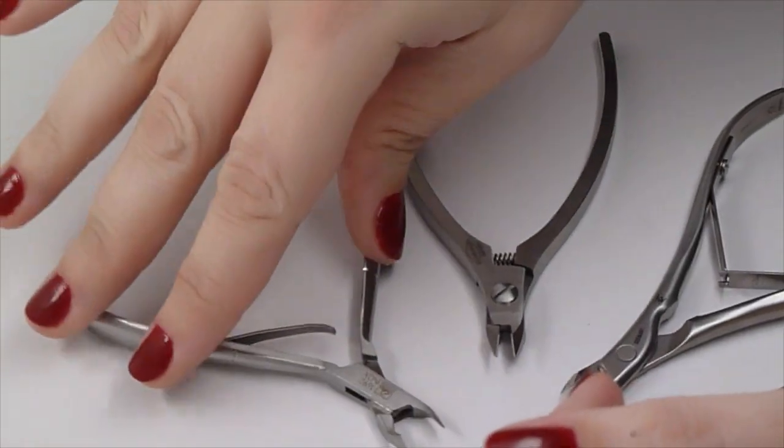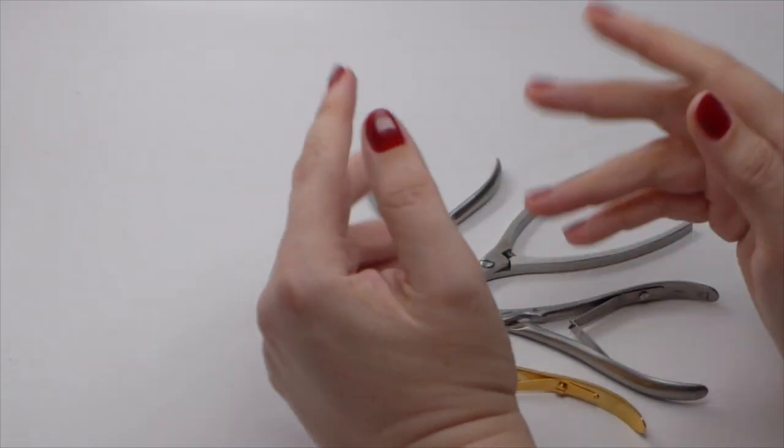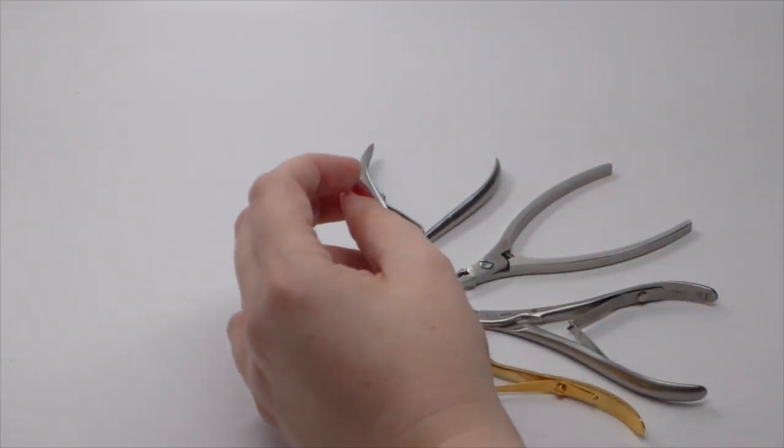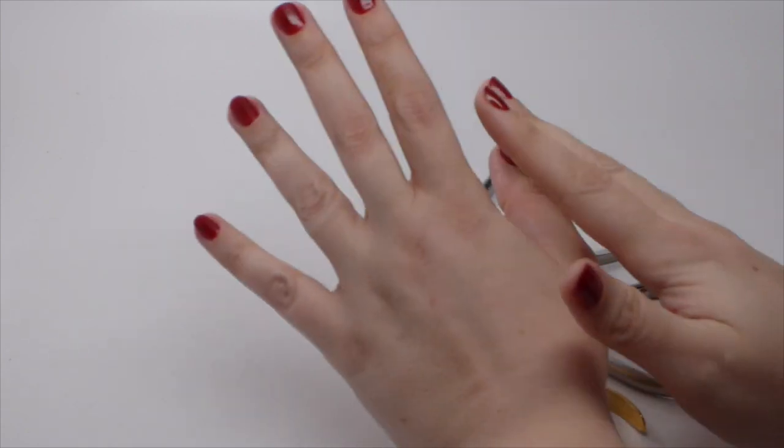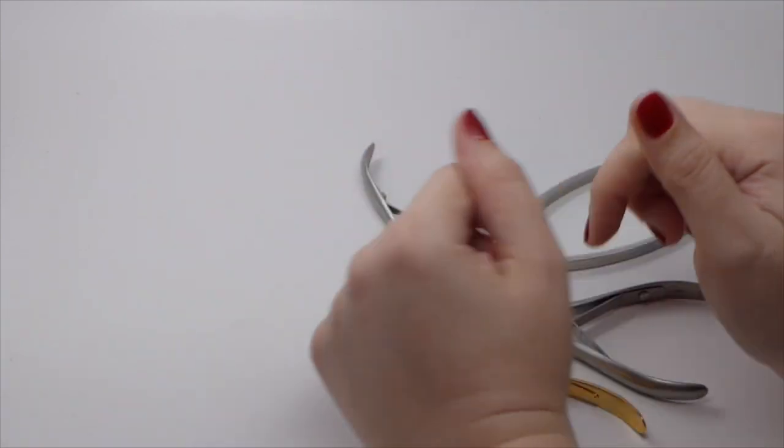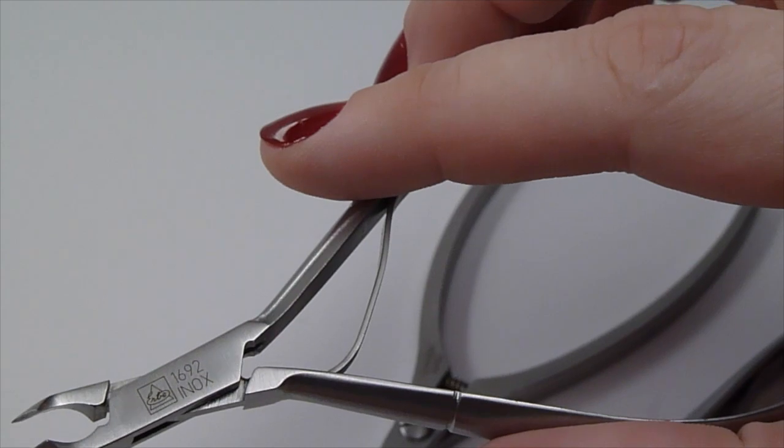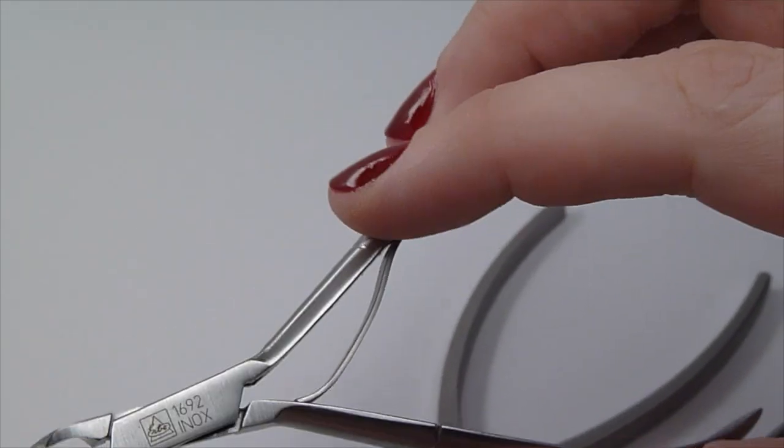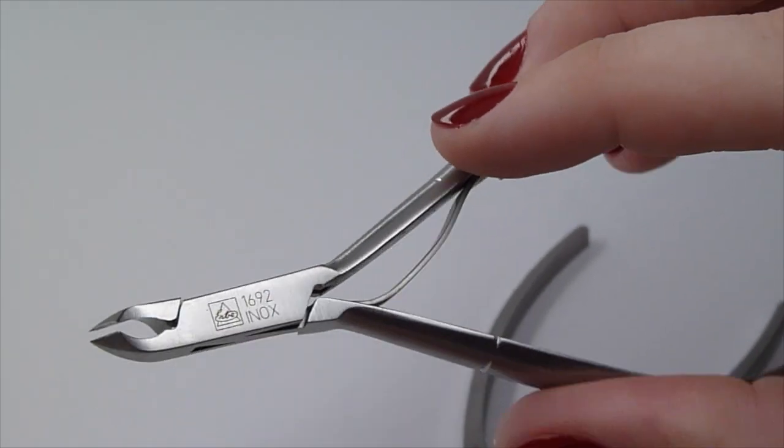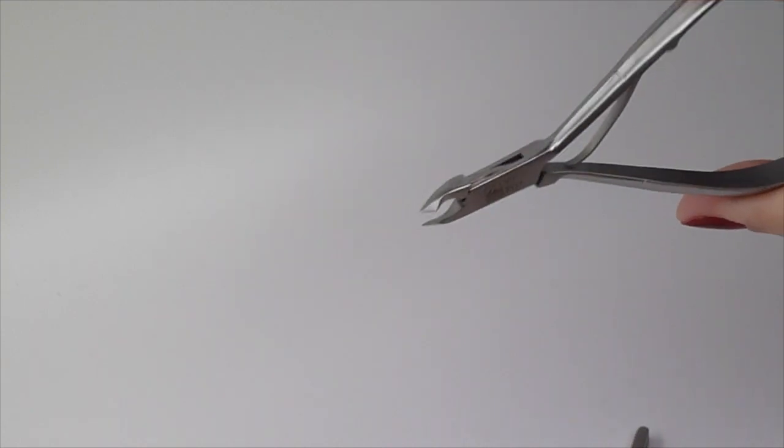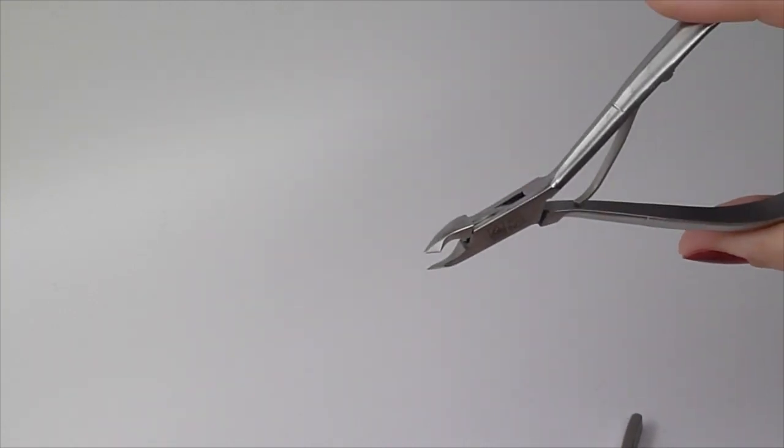The second thing to consider when choosing your cuticle nippers is a spring. Generally speaking, the most common types are a double spring or a single spring. Now a single spring slides across the opposite handle and friction can sometimes be a problem. So you want to pick a spring tip that's designed to minimize friction.